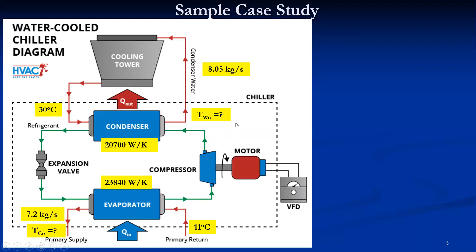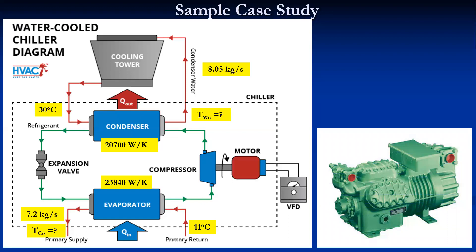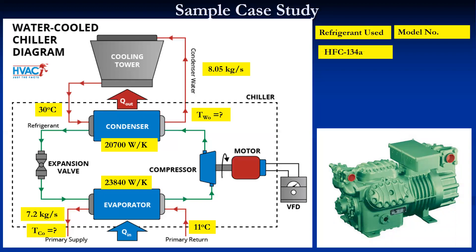The compressor used in the sample case study is a reciprocating type, with refrigerant HFC 134a and model number 4×2CC-3.2Y. Here, 4 stands for the number of cylinders. The main problem is to investigate the performance of this existing system, including the outlet temperature of the evaporator and condenser, the evaporating temperature TL, and the condensing temperature TH.